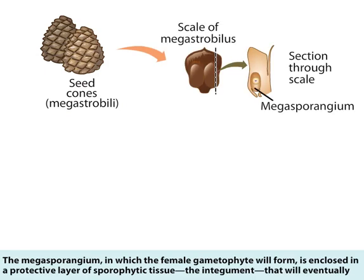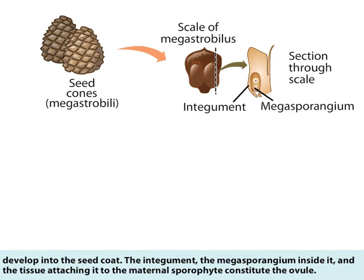The megasporangium, in which the female gametophyte will form, is enclosed in a protective layer of sporophytic tissue called the integument, that will eventually develop into the seed coat. The integument, the megasporangium inside it, and the tissue attaching it to the maternal sporophyte constitute the ovule.